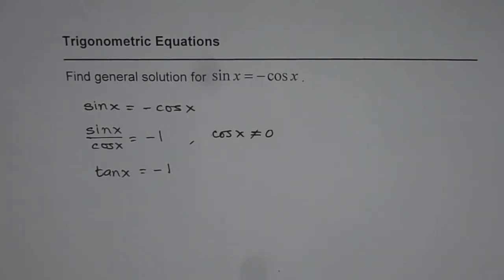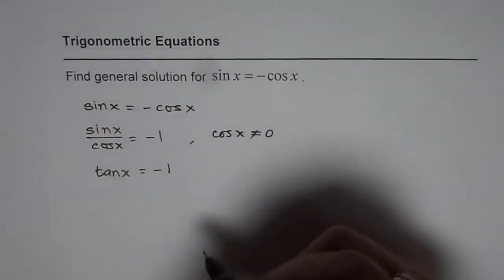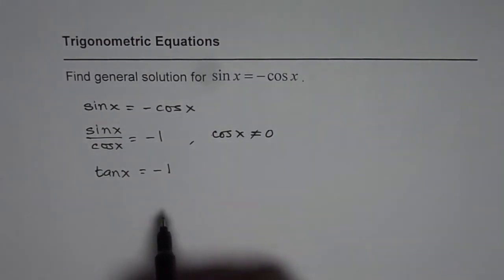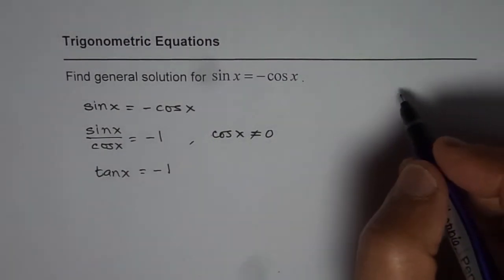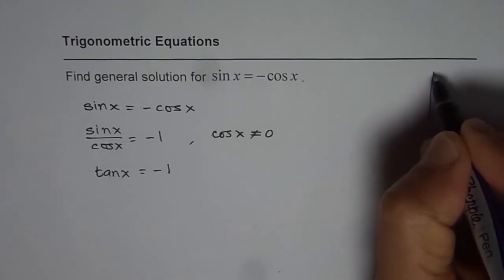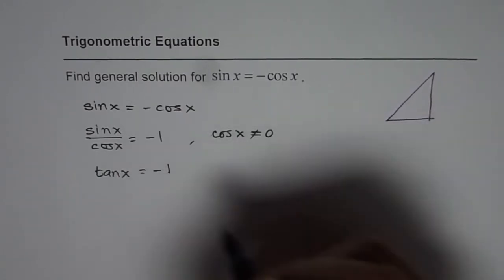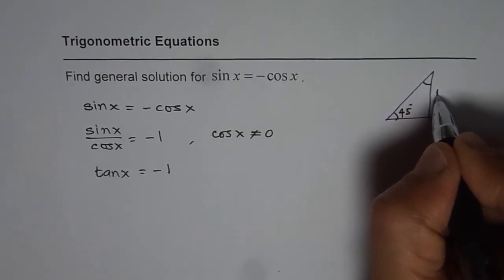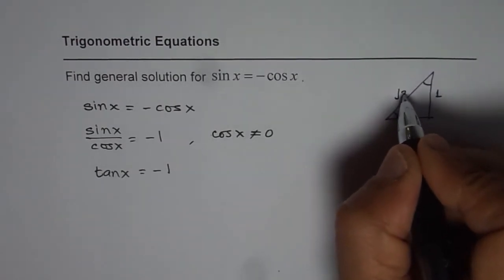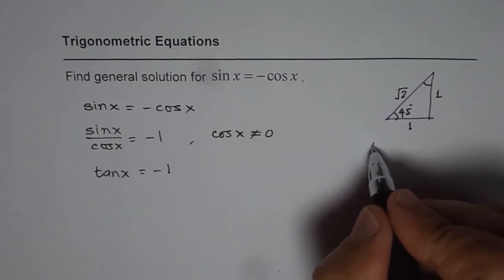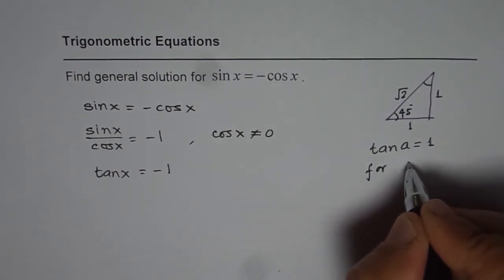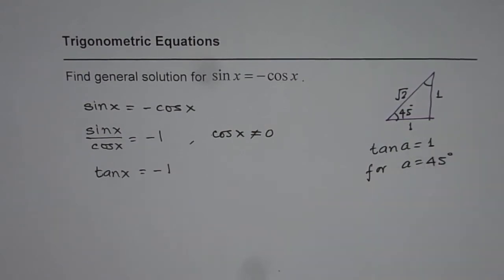Now you could use calculator at this time and find the solution. You could use your knowledge about tan graph and find the solution, or you can use special triangles. When it is like tan x equals minus 1, we will use the approach with special triangles. If I have a triangle with 45 degrees for example then I have these opposite sides which are 1 each and the hypotenuse is root 2. So what we know from here is that tan a equals 1 for a equals 45 degrees.